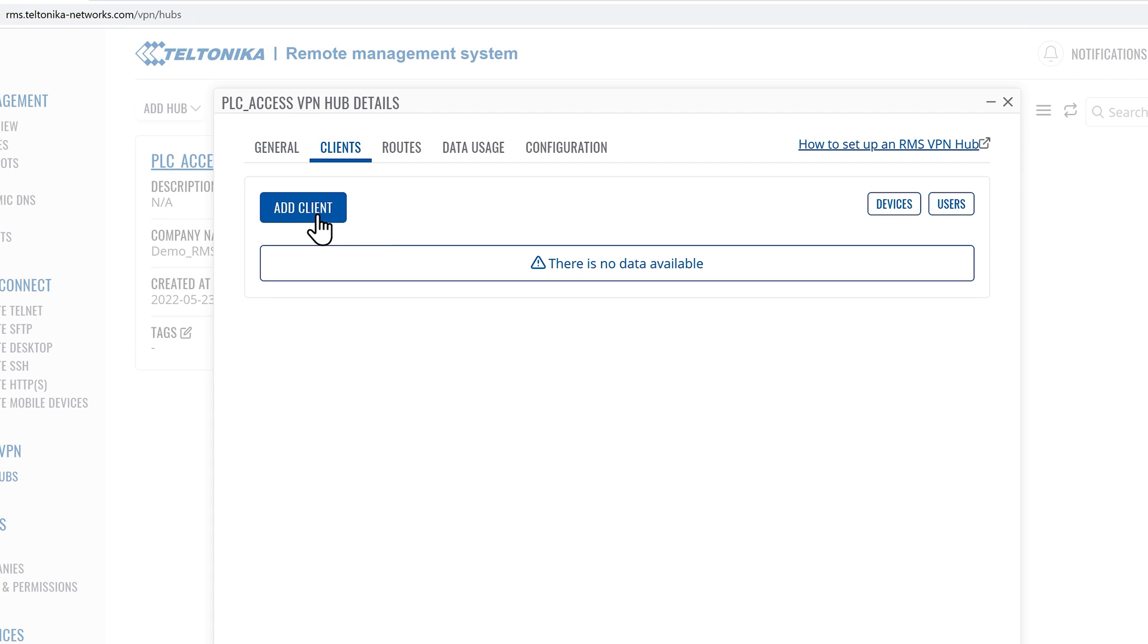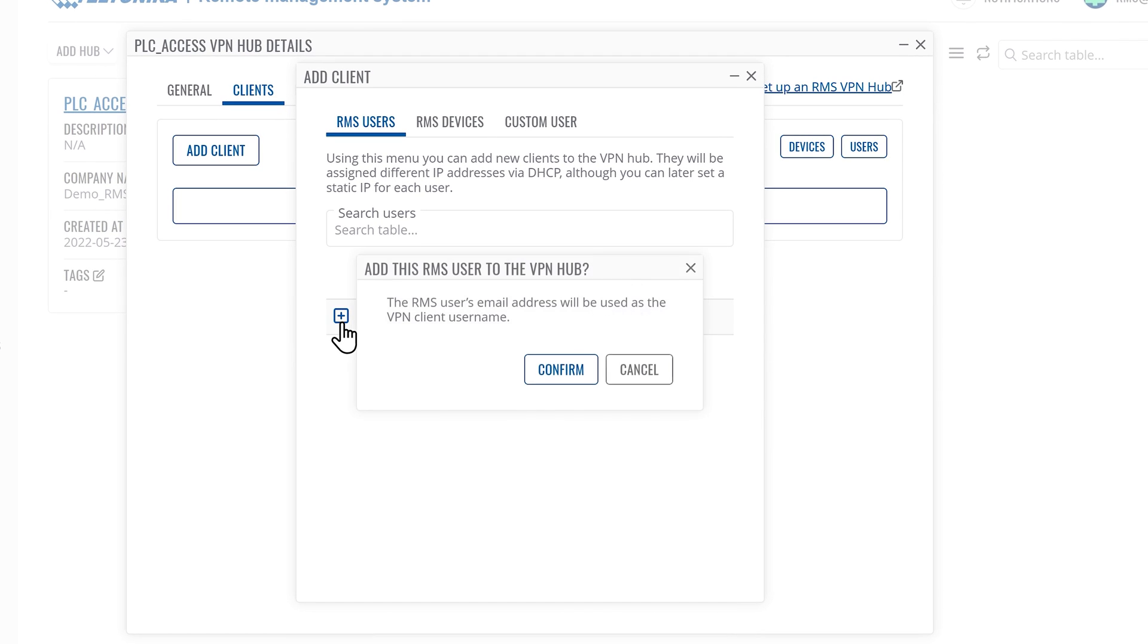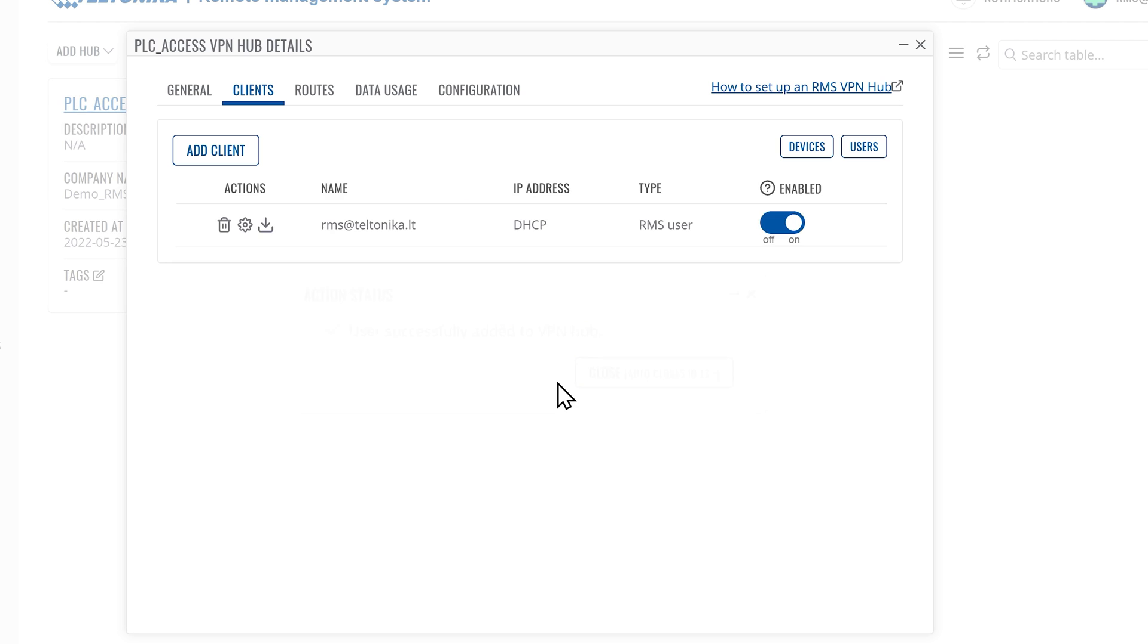Click on the Add Client button and then select an RMS user from the list. The user will appear in the clients list. Repeat this step to add the device.